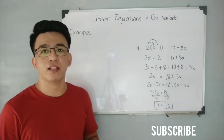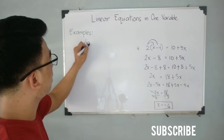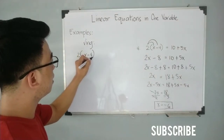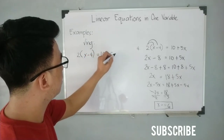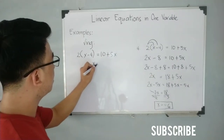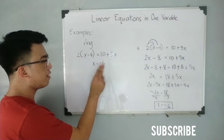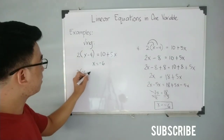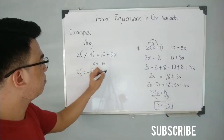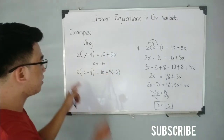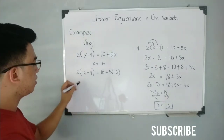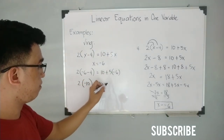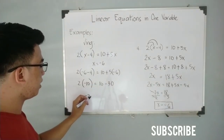To check whether your answer is correct, substitute the value back into the original equation: 2 times (x minus 4) is equal to 10 plus 5x. The value of x is negative 6, so substitute: 2 times (negative 6 minus 4) is equal to 10 plus 5 times negative 6. Simplifying the left side: negative 6 minus 4 is negative 10, and 2 times negative 10 gives negative 20. On the right: 5 times negative 6 is negative 30.